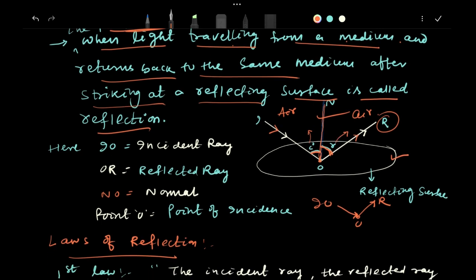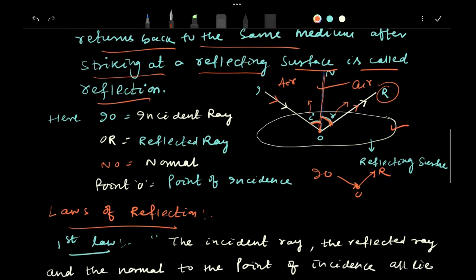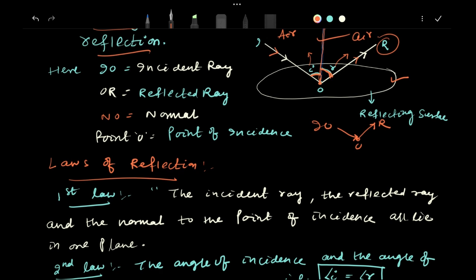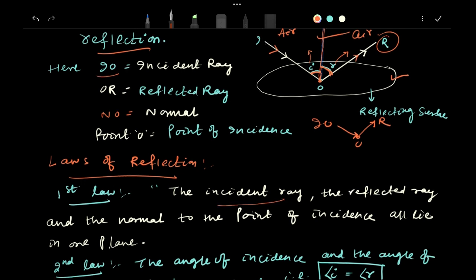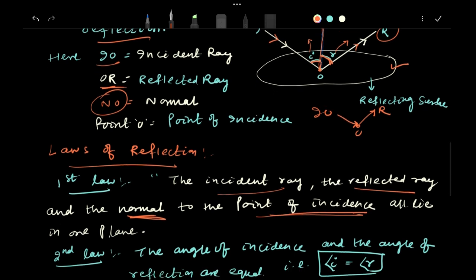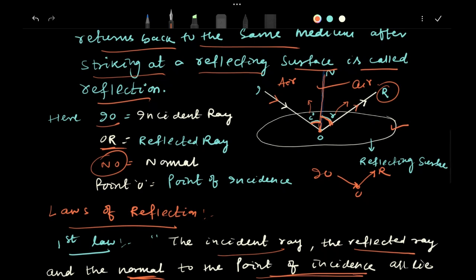This is what the basic is. Now this reflection law depends upon two particular concepts. One is called the first law of reflection. The first law of reflection is simply the concept that the incident ray which is your IO, the reflected ray which is your OR, and the normal which is your NO to the point of incidence all lie in one plane. They all lie in one plane, means if you are going to talk about this as a plane, they are considered to be lying on a single plane. If I will take XY as the plane, then the reflection is happening here.